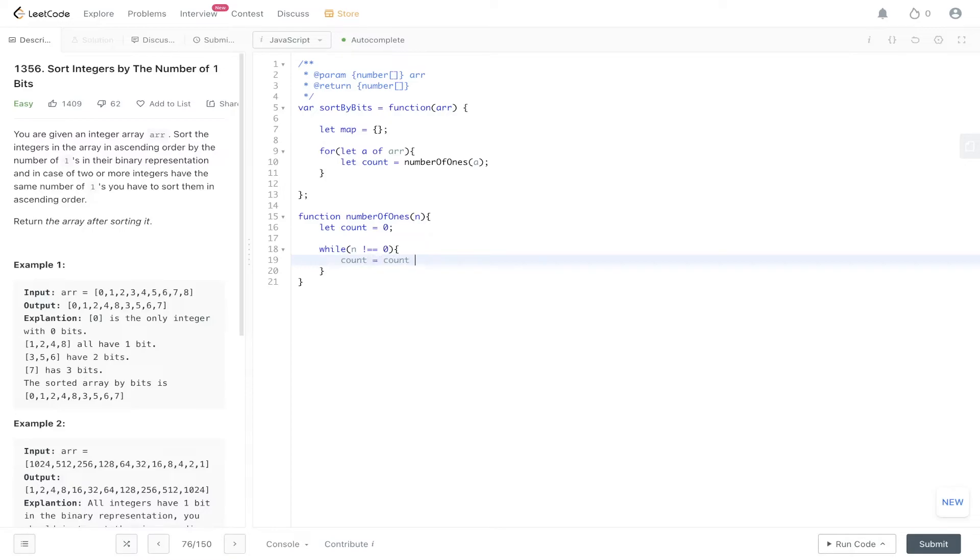Count is going to equal count plus n AND one. Remember, this is to find whether the least significant bit is a one or zero, and we just add that to the count variable. We can simplify this. Now we need to shift right to move the least significant bit. So n is equal to n shift right by one. From this, we need to return the count. This will be returned up to this count. Then we need to add that into the map. So map at a is equal to count.